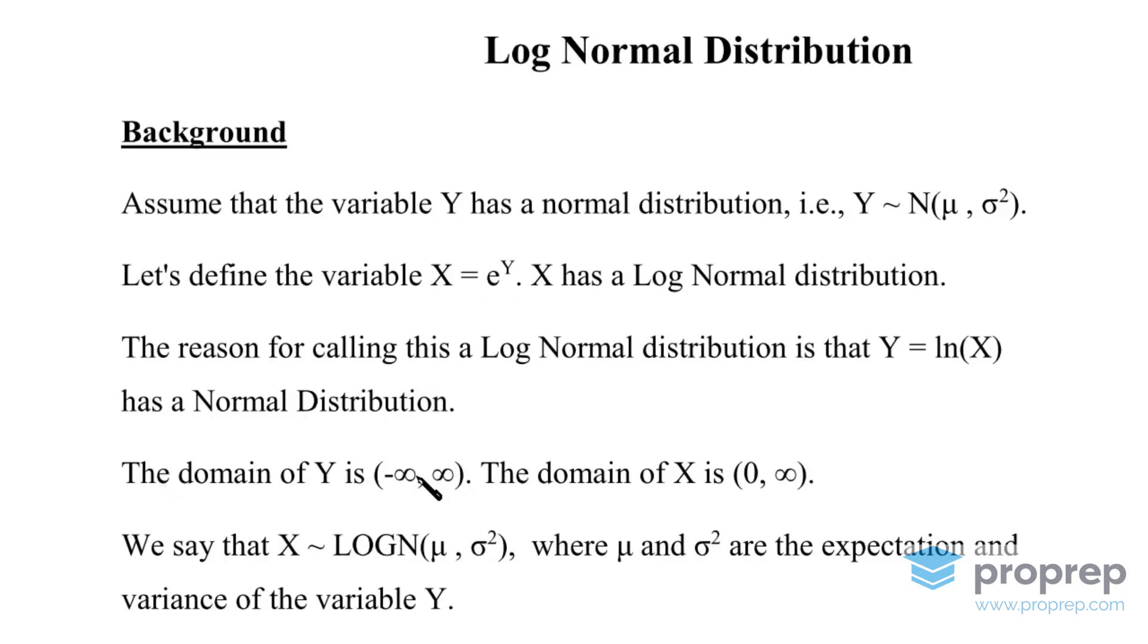Now, the domain of Y is from minus infinity to plus infinity. The variable Y can have values from minus infinity to plus infinity, but the domain of X has values only from zero to plus infinity. And why is that? Well, let's look at this relationship. As Y goes to minus infinity, then X goes to zero. And as Y goes to plus infinity, then X goes to plus infinity.